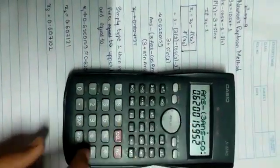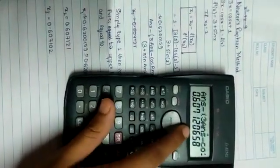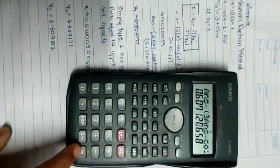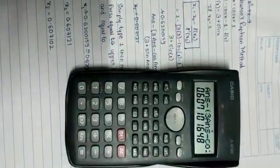Now we want to get x2 value, then simply press again equal to. We will get x2 value. To get x3 value, simply press equal to. Then we will get x3 value.